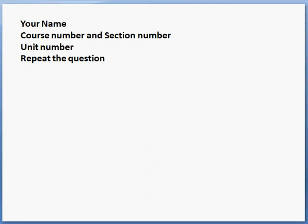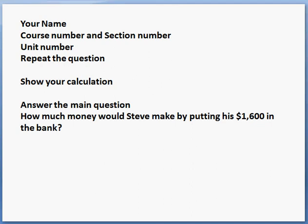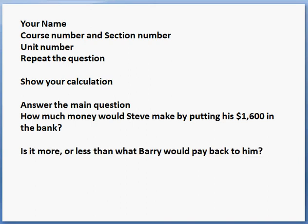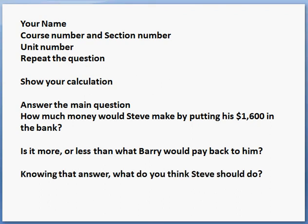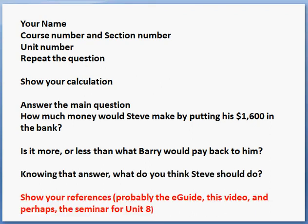When you go to do this homework, remember: at the top of the page, put your name, course number and section number, the unit number, and repeat the question as we always do. Then show your calculations — that's the whole objective of this problem. Answer the main question: how much money would Steve have in the bank if he put his $1,600 in the bank for three years at 6% interest? Is it more or less than what Barry would pay him back? And knowing that answer, what do you think Steve should do? At the very bottom, remember to show your references — the e-guide for Unit 8, perhaps this video, and perhaps the seminar for Unit 8.